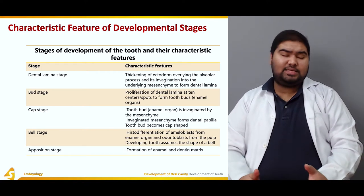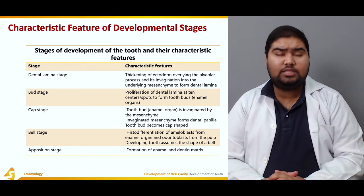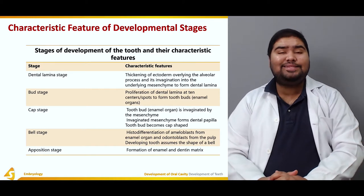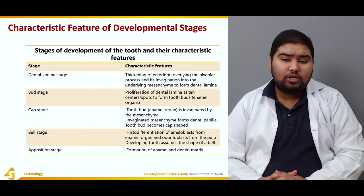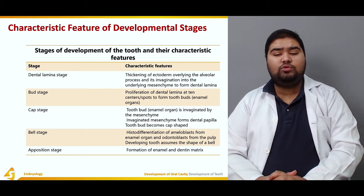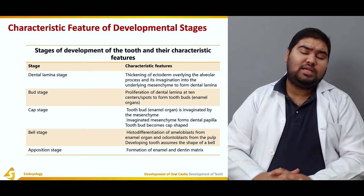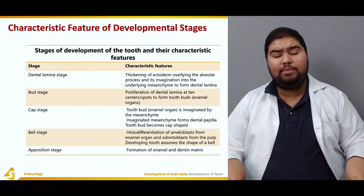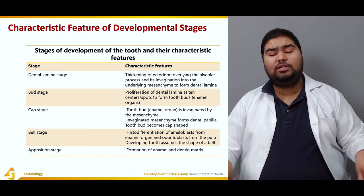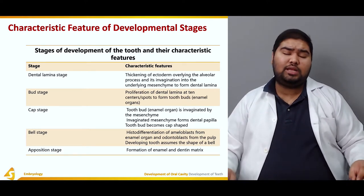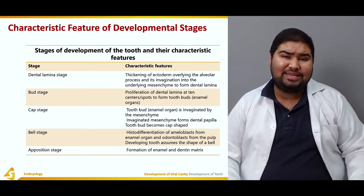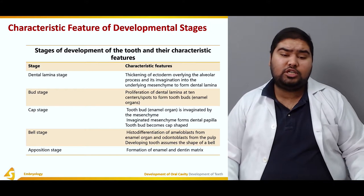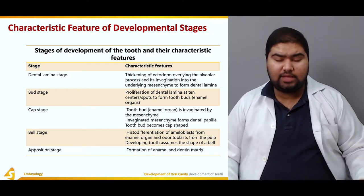At the bud stage, there is proliferation of the dental lamina at 10 centers or spots to form tooth buds. The dental lamina formed in the previous stage now undergoes proliferation at 10 different sites, and this proliferation is known as the bud stage.